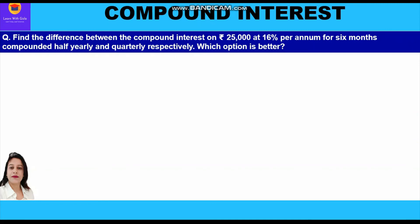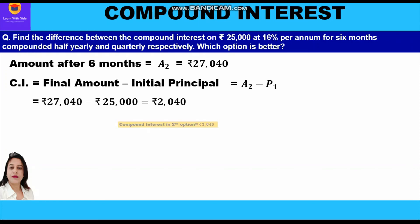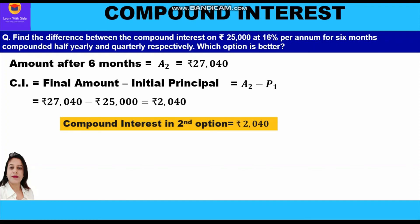After calculating the amount for 6 months, that is 2 quarters, we get Rs 27,040. Compound interest is the difference between the final amount and initial principal: 27,040 − 25,000 = Rs 2,040 as the compound interest when interest is compounded quarterly.